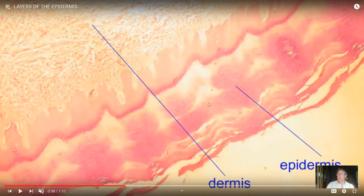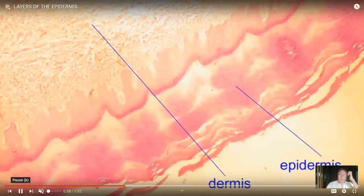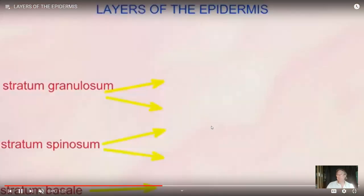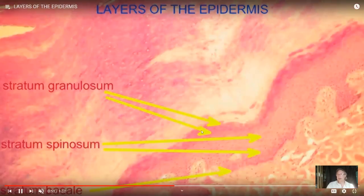Here you can see the integument. Notice it is an organ — we have epithelia in the epidermis and connective tissue in the dermis. There are different layers of the epidermis. The outermost layers are composed of dead keratinized cells. The stratum basale is near the connective tissue of the dermis, and at some point — as we go through the different layers — these cells die, and that occurs in the stratum granulosum.